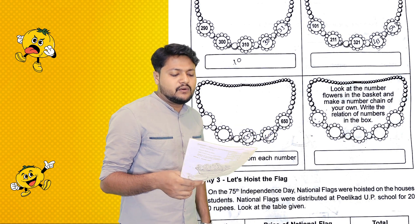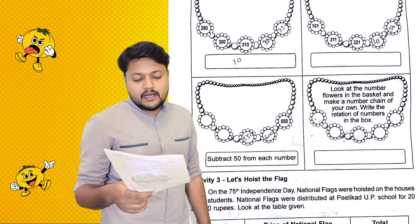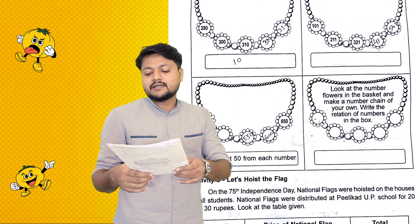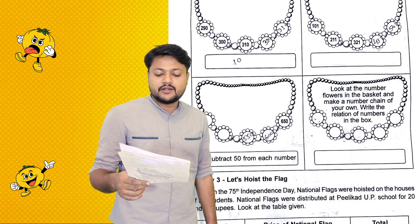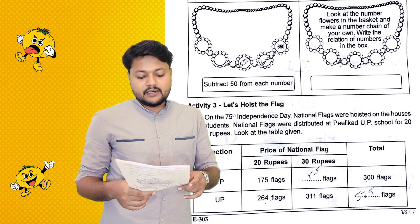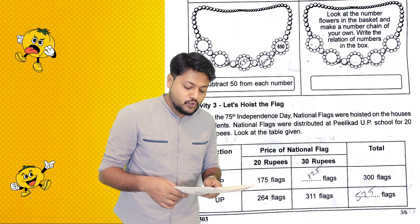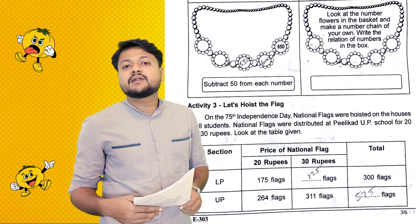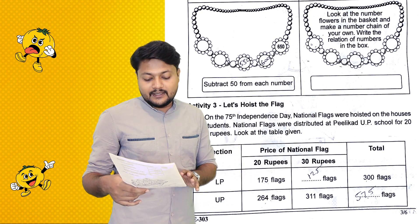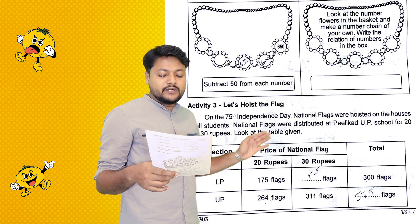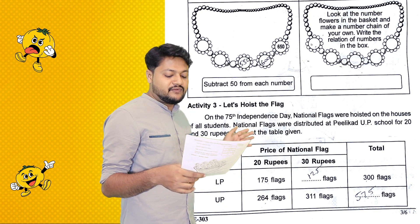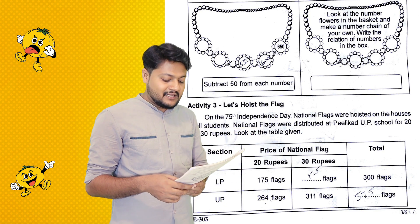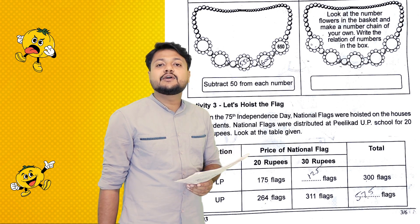Activity 3: On the 75th Independence Day, national flags were hoisted in the houses of students. National flags were distributed at Peelikad LP and UP School for 20 rupees and 30 rupees. Look at the table given. There are 75 flags each, with a total of 300 flags.